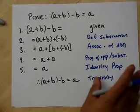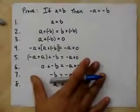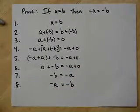Transitivity. Oh well, kind of messed up. But, let's see if we can do another one. Let's prove if A equals B, then negative A equals negative B.